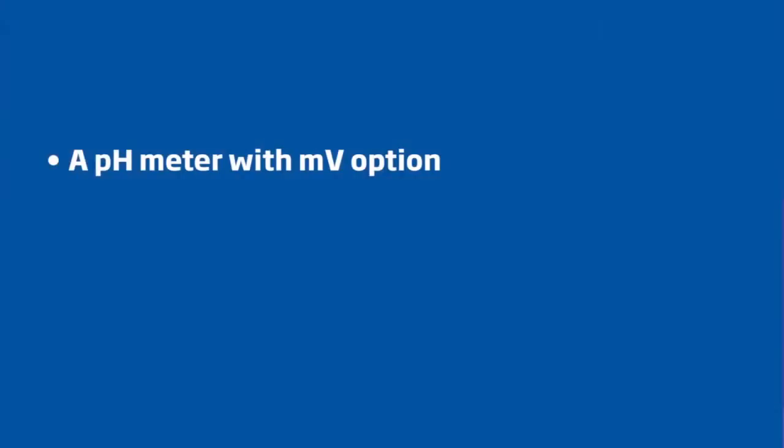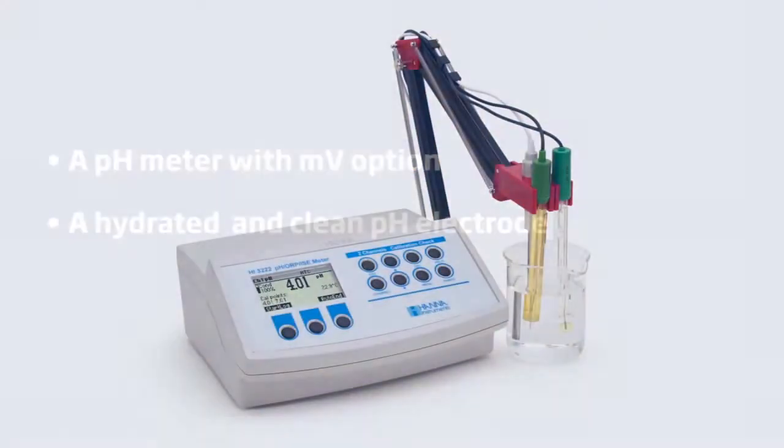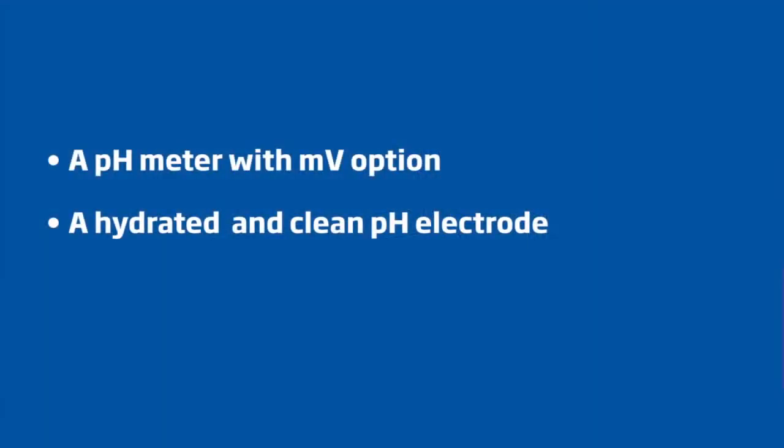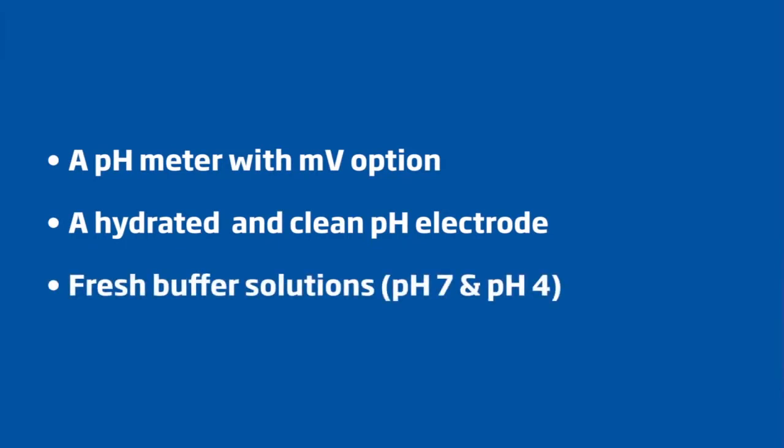Before proceeding with checking the pH electrode condition, the user will need a pH meter with a millivolt option, such as the HI3222, to ensure that the pH electrode glass is hydrated and clean, and fresh buffer solutions.